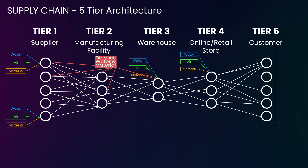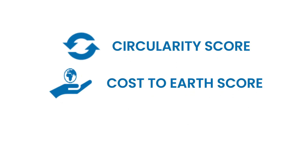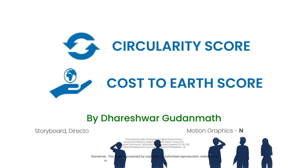Even with the movement of goods across different tiers, the CO2 emissions can be calculated. The inputs and outputs at each tier will give the total air, water, and land pollution incurred, forming the basis of the Cost Earth Sustainability Model.